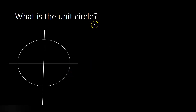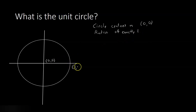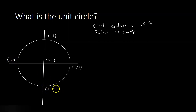So, what is the unit circle? The unit circle is simply a circle that is centered on the origin — that is, (0, 0), this location here. It has a radius of exactly 1. This means that this point on the right is going to be exactly (1, 0), and every point along this arc is going to be exactly 1 away from the origin. So this point on the top is going to be (0, 1), this point on the left is going to be (-1, 0), and this point at the bottom is going to be (0, -1). Every point on the circle is exactly 1 away from the center.